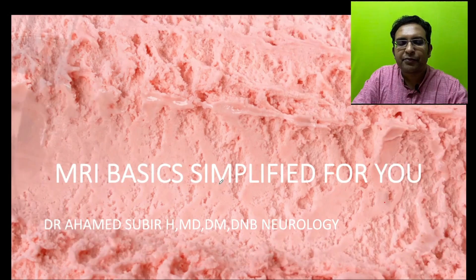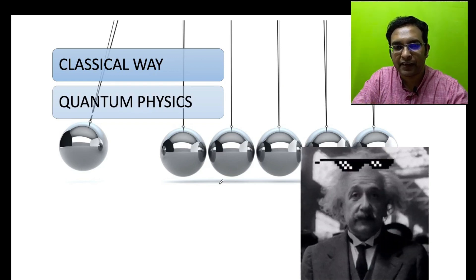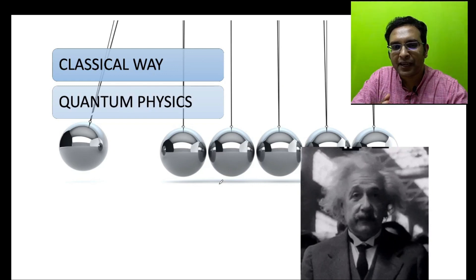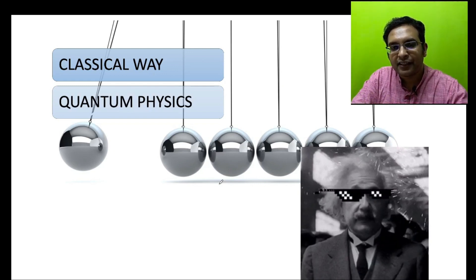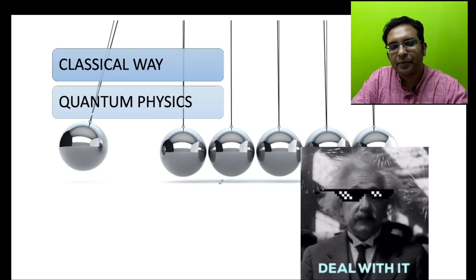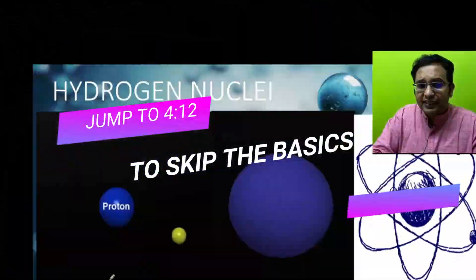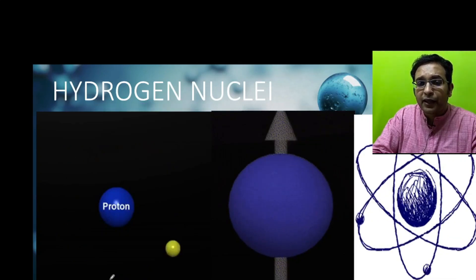MRI can be taught in two ways: the classical way and the quantum physics way. We are not Einstein, Schrödinger, or Max Planck to study all of quantum physics and then understand MRI. We are basically physicians, neurologists, and pediatricians trying to get the grasp of this imaging modality. The basic principle is called nuclear magnetic resonance.